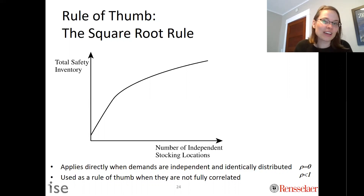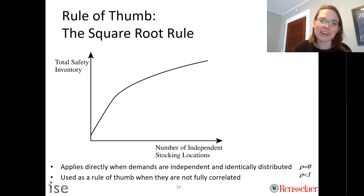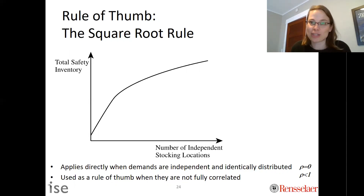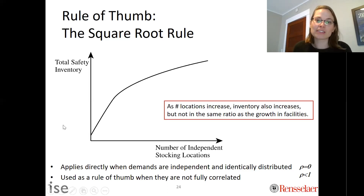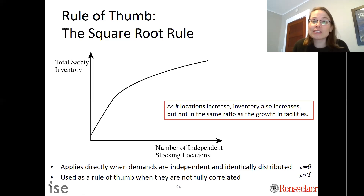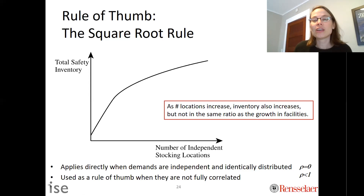This is something that friends in consulting carry in their back pocket. When evaluating a client's network — meaning how many locations they store their inventory — they use this as a quick approximation. The big takeaway is that as the number of independent stocking locations increases, your safety stock also increases, but not at a linear rate. It increases at the square root of the number of independent stocking locations.